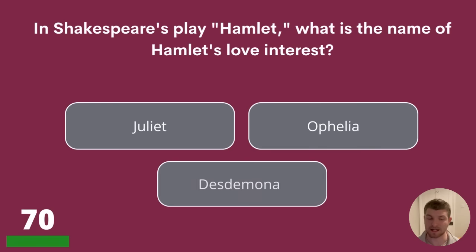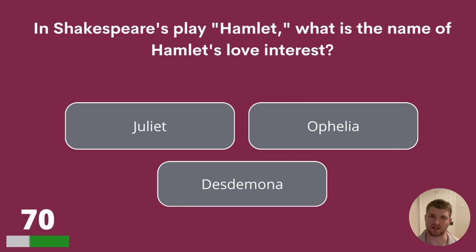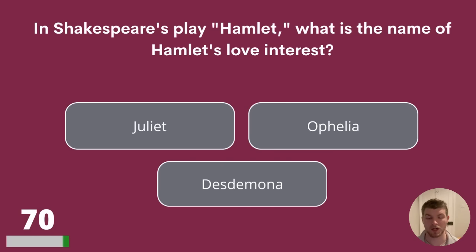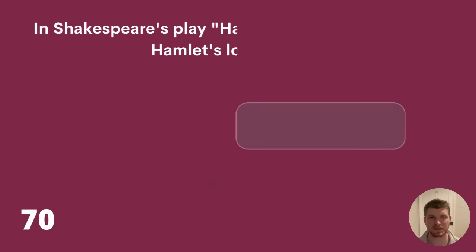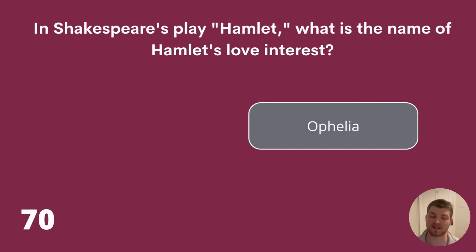Question 70. In Shakespeare's play Hamlet, what is the name of Hamlet's love interest? Is it Juliet, Ophelia, or Desdemona? All of those names appear in Shakespeare texts, but Hamlet's love interest is Ophelia.